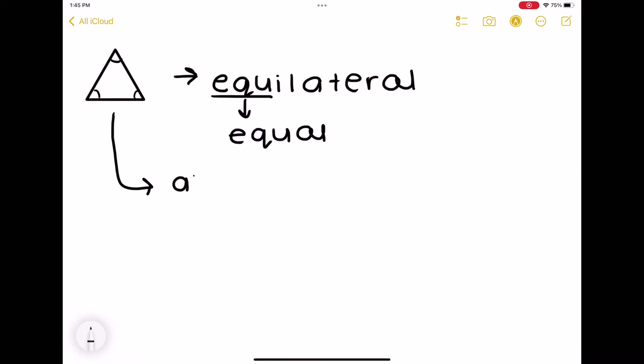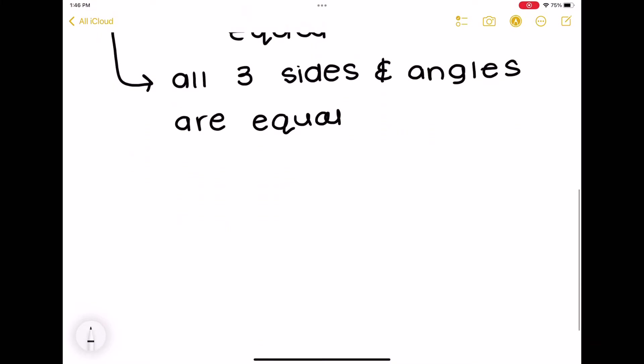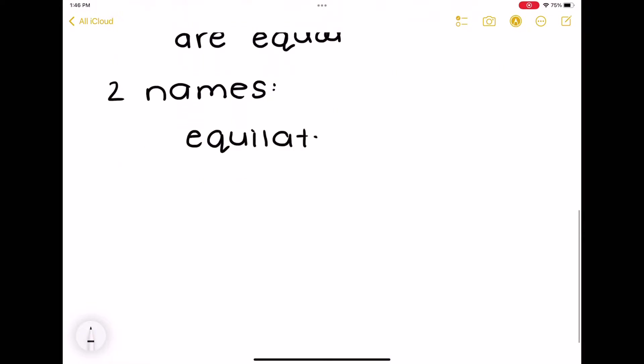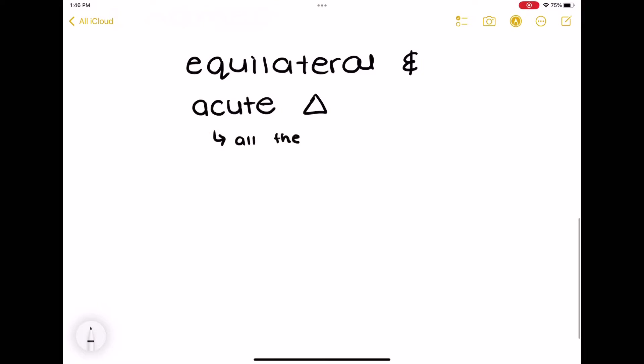So if you're having trouble remembering what an equilateral triangle is, look at the first part of the word and think equal. All three sides and angles are equal in measurement. So it's classified as an equilateral triangle, but it's also considered as an acute triangle, and it's considered acute because all of the angles are acute, meaning it's an acute triangle.